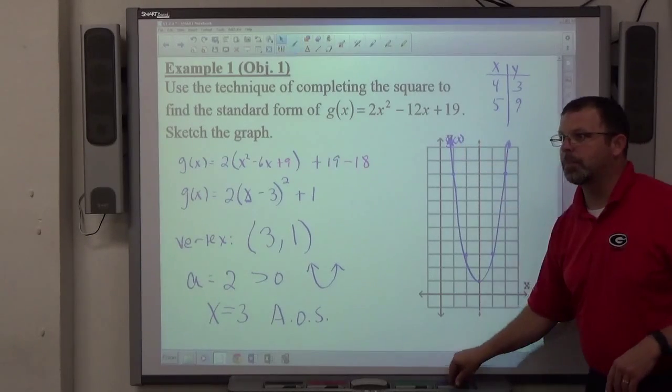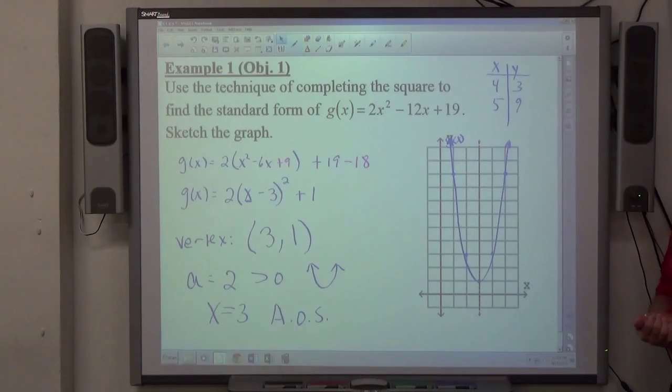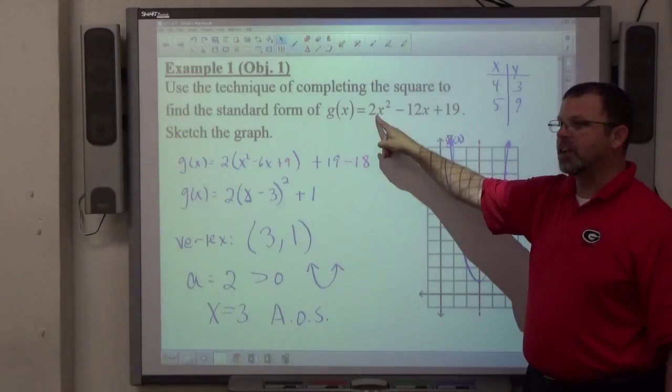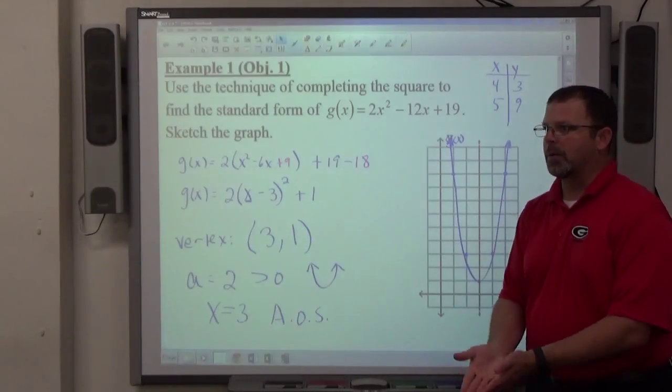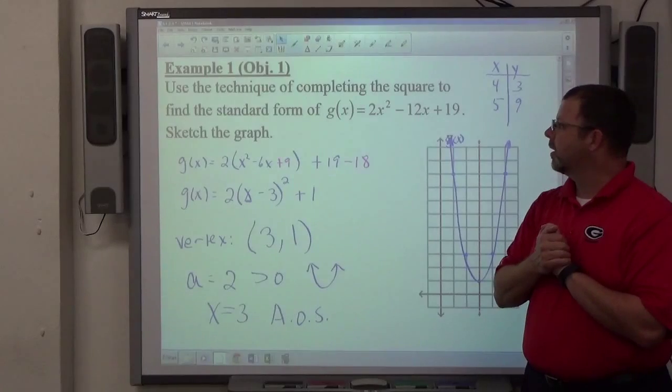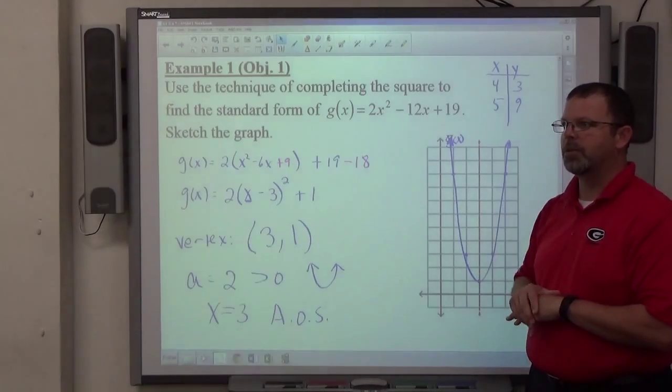What you notice about this parabola compared to the ones we've seen already is that one's a little bit steeper. As the lead coefficient gets bigger and bigger, the parabola is going to go upward much more rapidly, which causes more steepness or a thinner parabola.